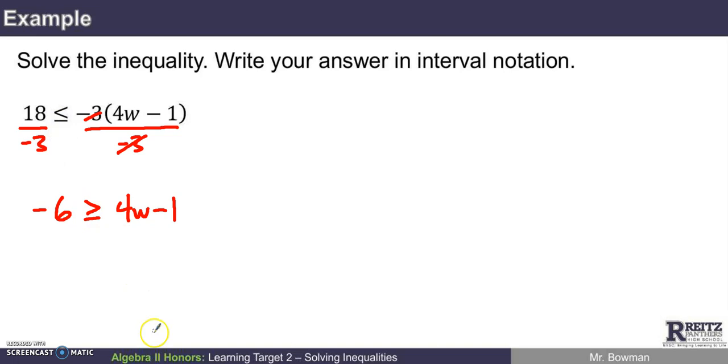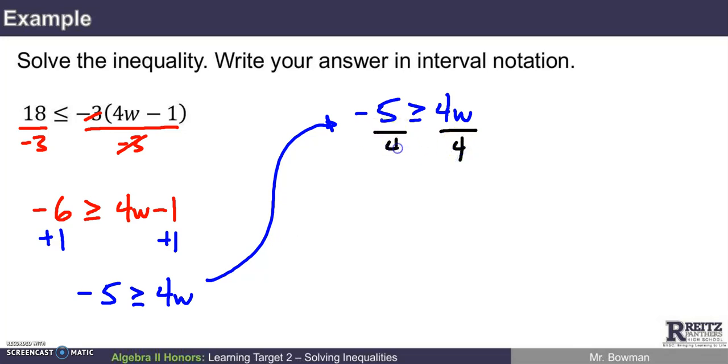And now I can kind of carry on as you probably would. I'll add 1 to both sides. I've got negative 5 is greater than or equal to 4w. Just pull it over here just to have room to work on it. Negative 5 is greater than or equal to 4w. If I now divide both sides of the inequality by 4, which would be the way to isolate w, I'll get negative 5 fourths is greater than or equal to w. I didn't have to flip the inequality here because I divided by a positive number.